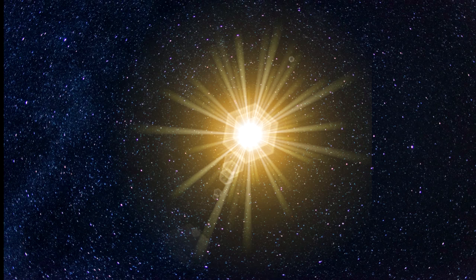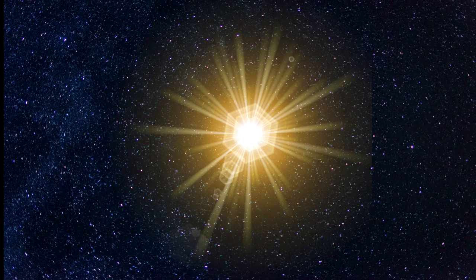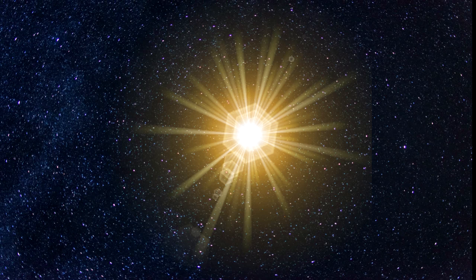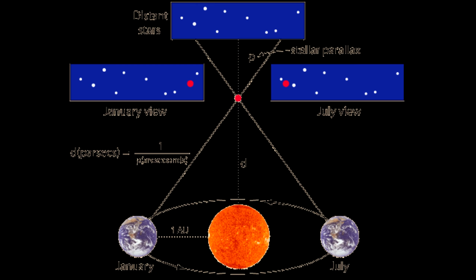Just like your fingertip, stars that are closer to us shift positions relative to more distant stars. By carefully measuring the angle through which the stars appear to move over the course of the year and knowing how far the earth has moved, astronomers are able to use basic high school geometry to calculate the star's distance.